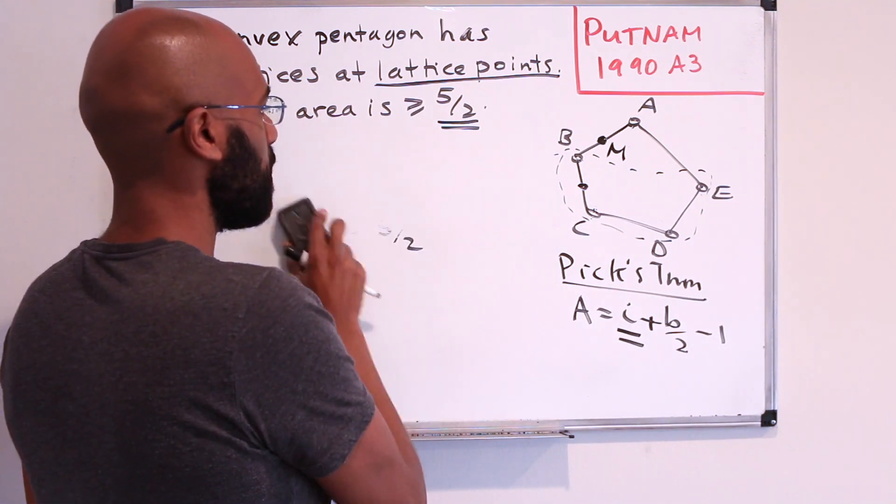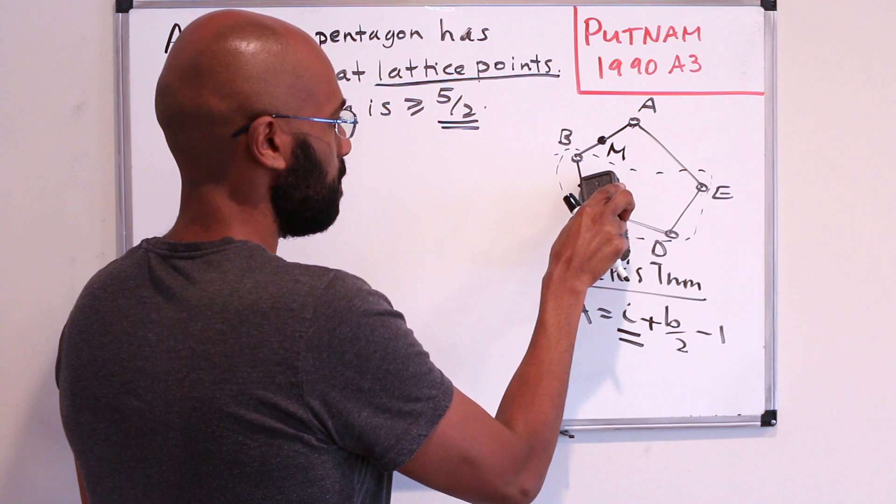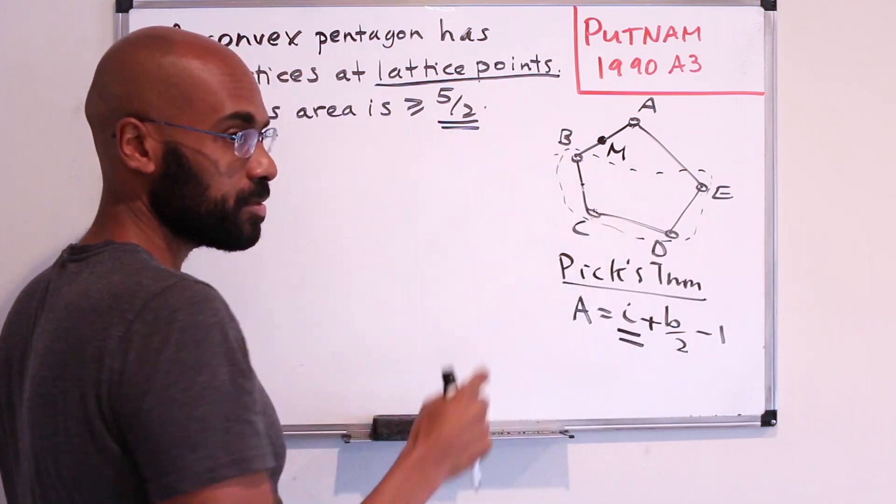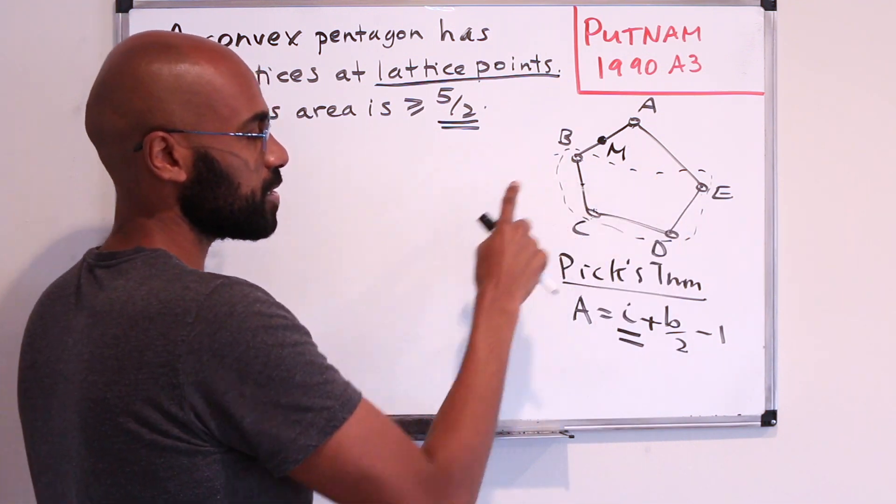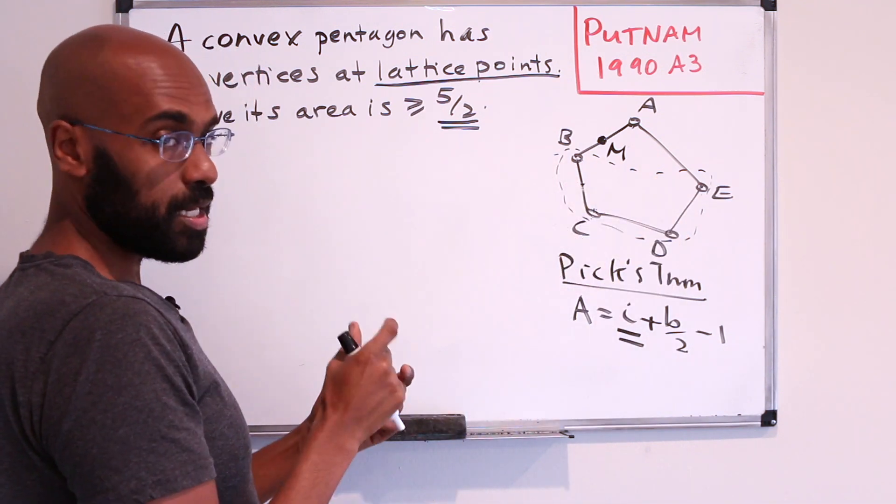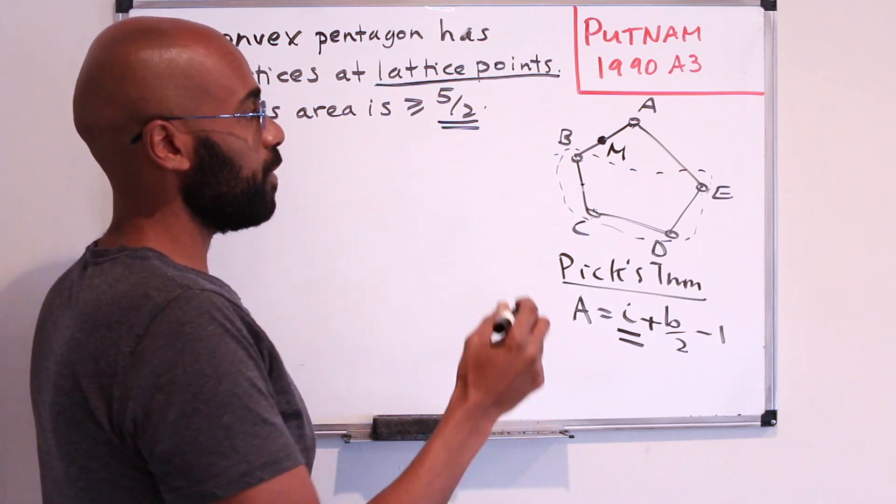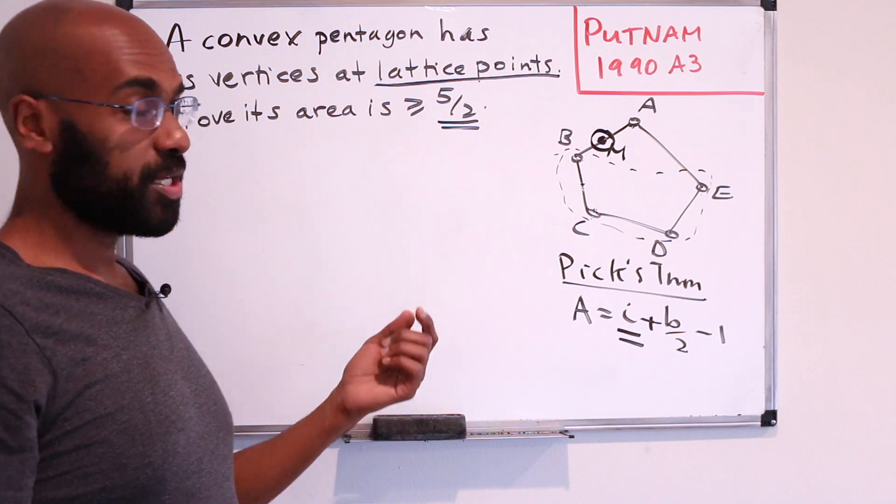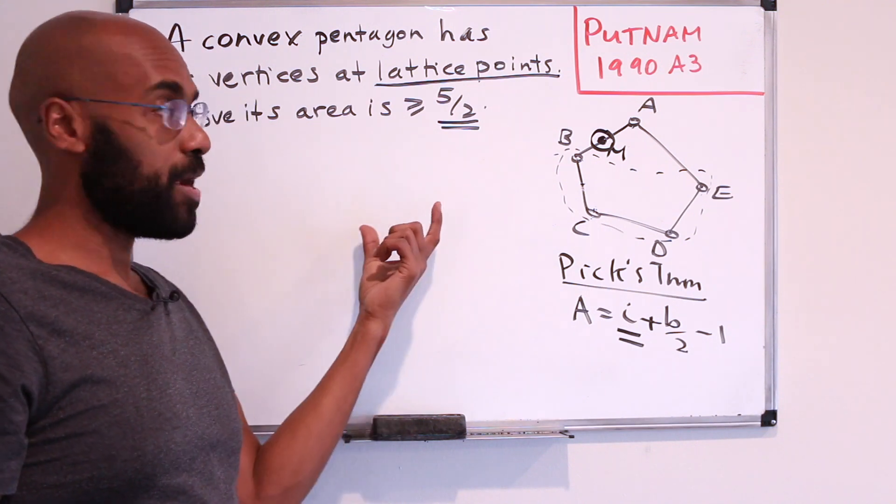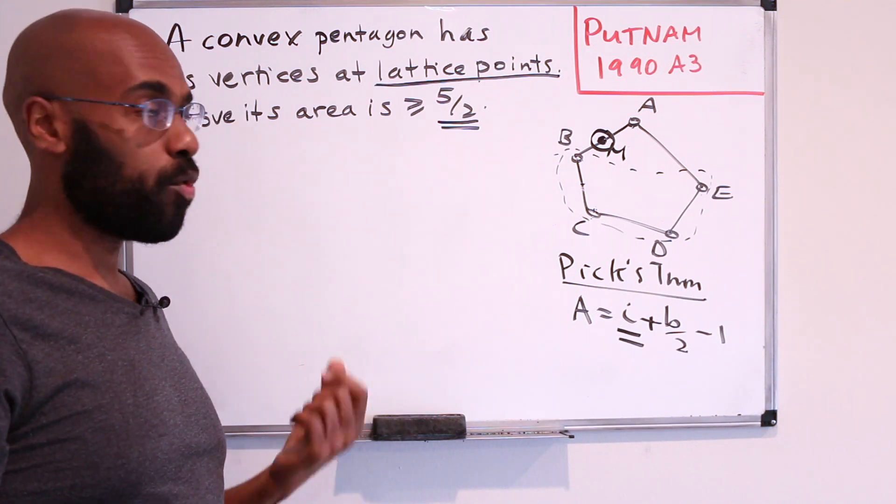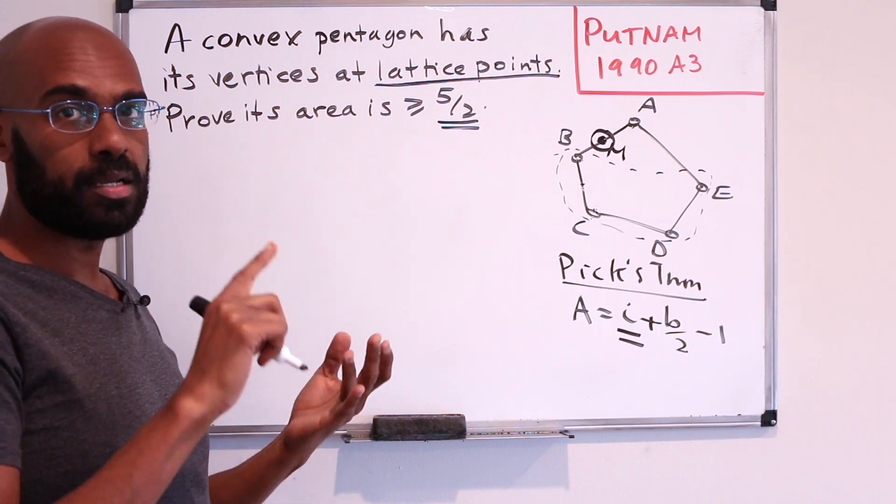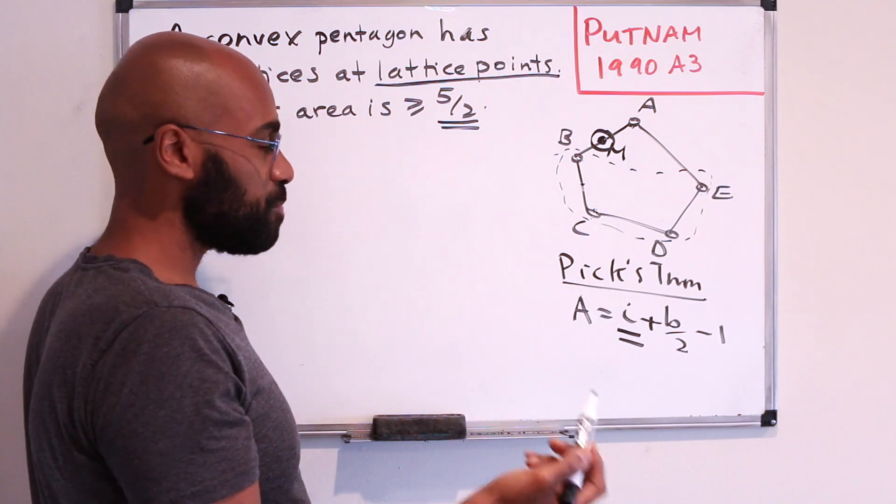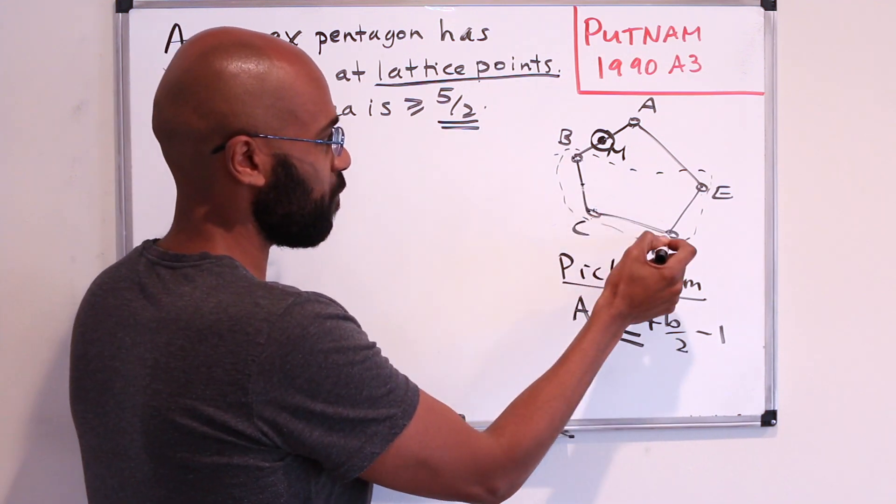Okay, so by that argument, then it must be the case that all four of these points, or we can make the assumption that all four of these points have different parities in their coordinates. Okay, well if that's the case, then this point M must share, because there's only four possibilities for the parities of both coordinates, either even, even, odd, odd, even, odd, or odd, even, it must then be the case that M shares parity with one of these four points.